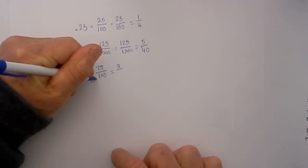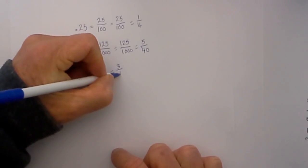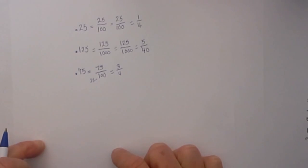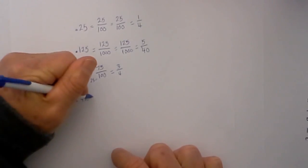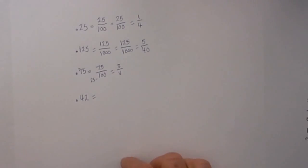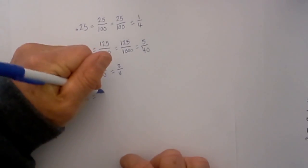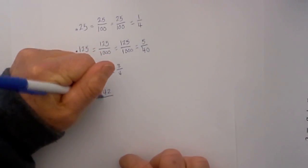Let's look at one that doesn't work out so pretty. .42 is equal to - I write a fraction, I put 42 over, I look at the last unit tenths, hundredths.